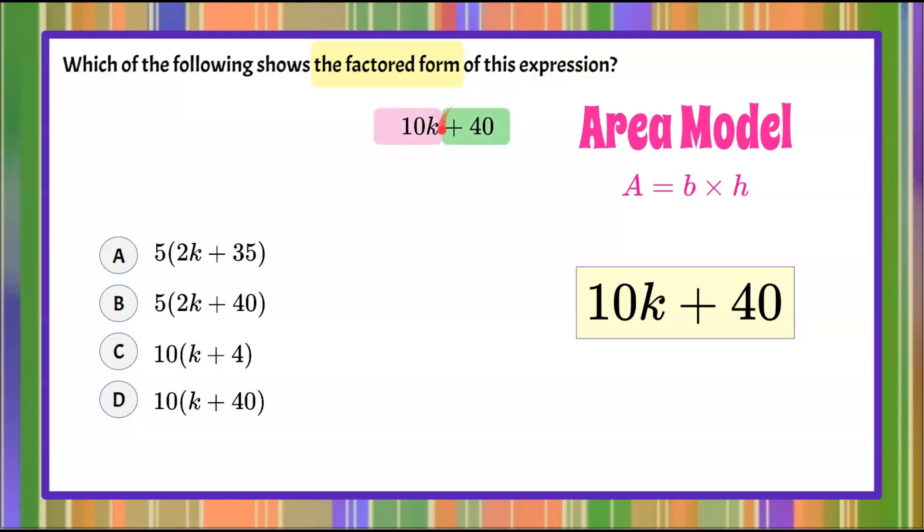So our variable term is 10k, and our constant term is 40. We're going to consider our area model here to be two rectangles put together. We're going to find the area of the one with the variable expression, and then the area of the one that's a constant term.